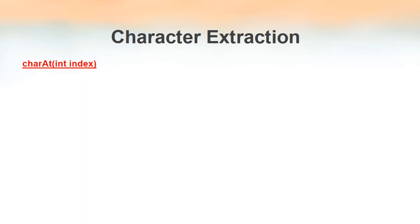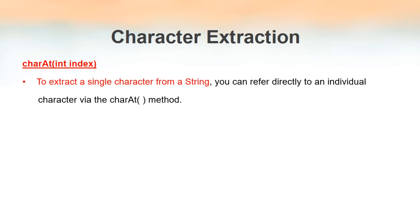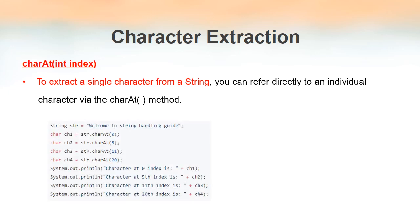The four methods used to extract characters from a string are: charAt, getChars, getBytes, and toCharArray. We will see them one by one. First, we will look at the charAt method. This method takes one parameter of type integer — the index number from which we have to extract the character. It is used to extract a single character from a string.